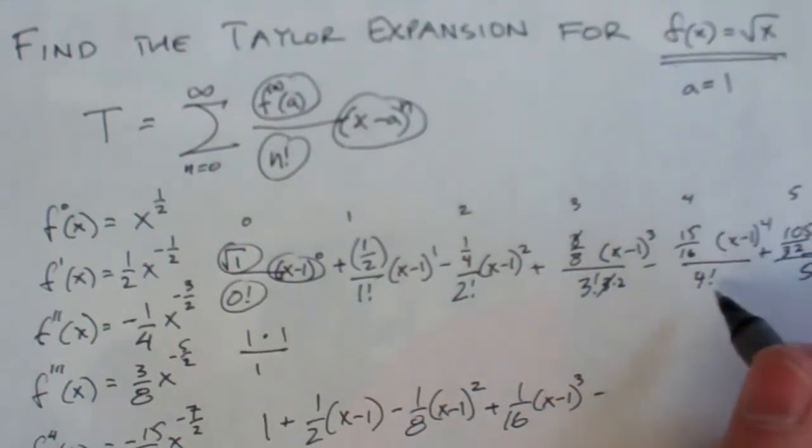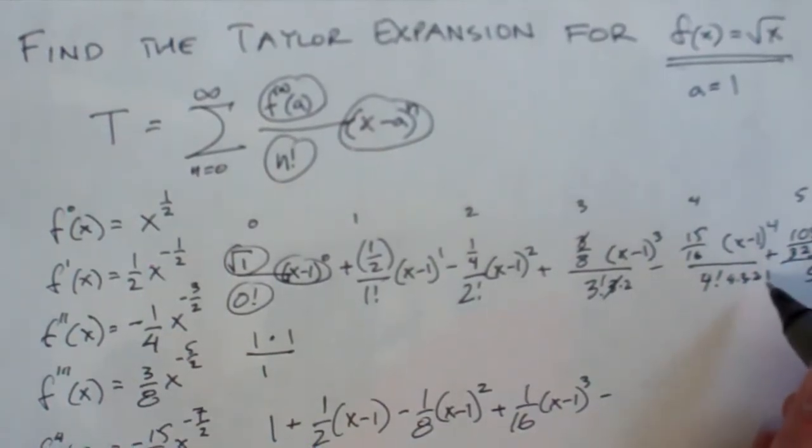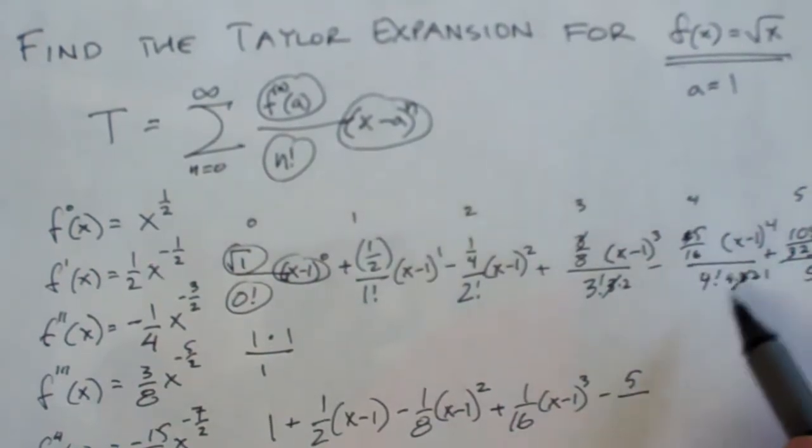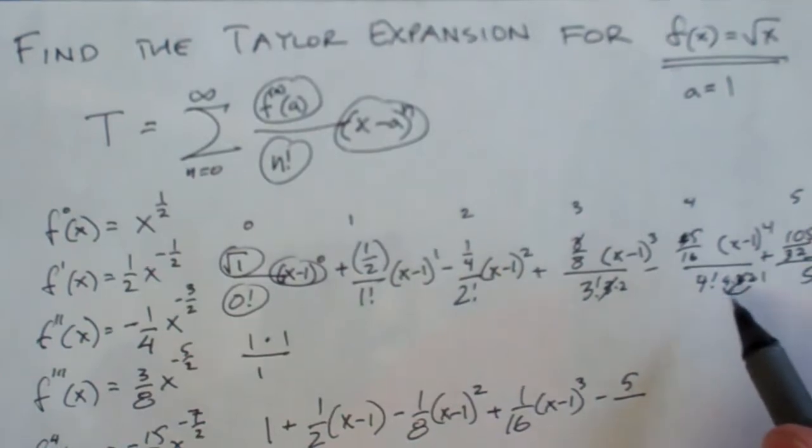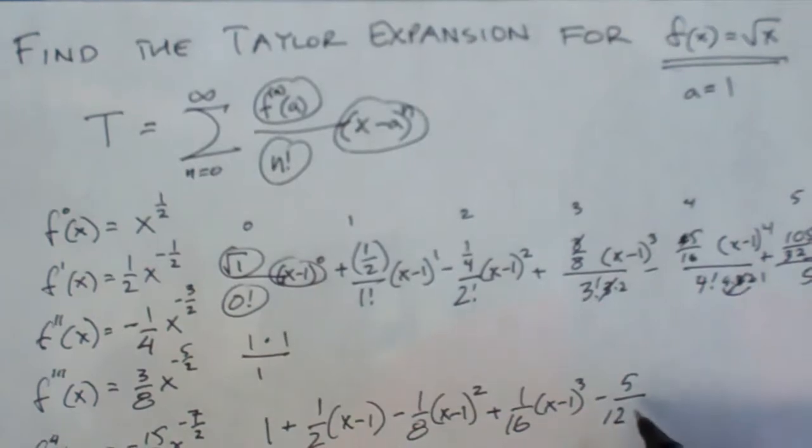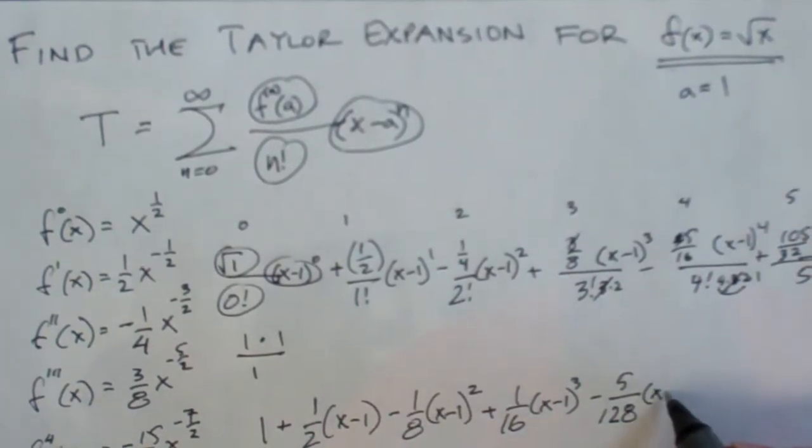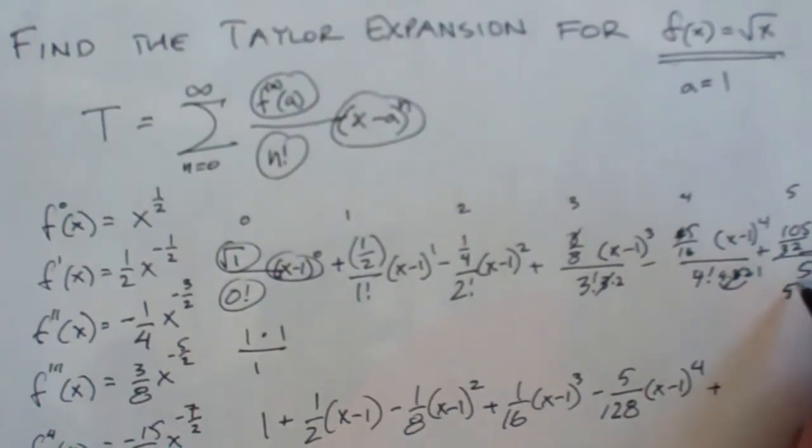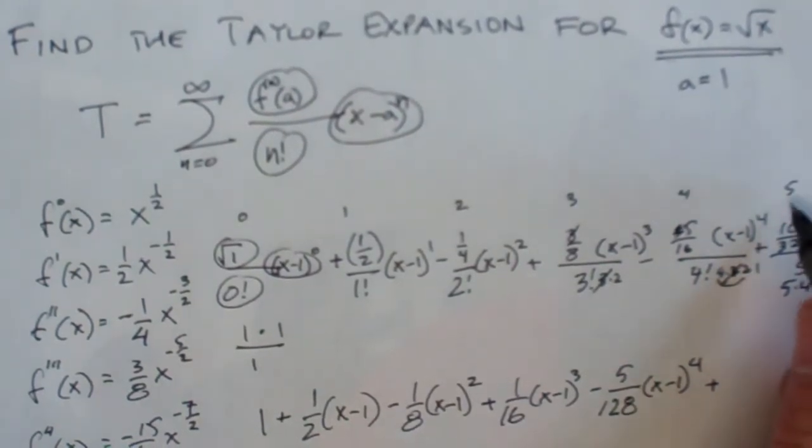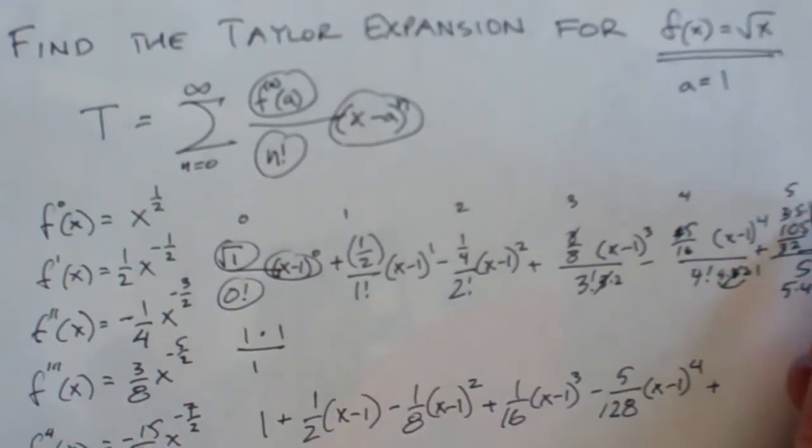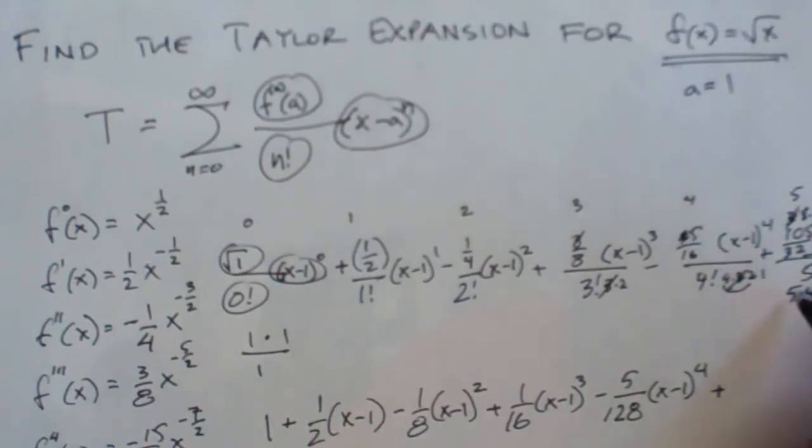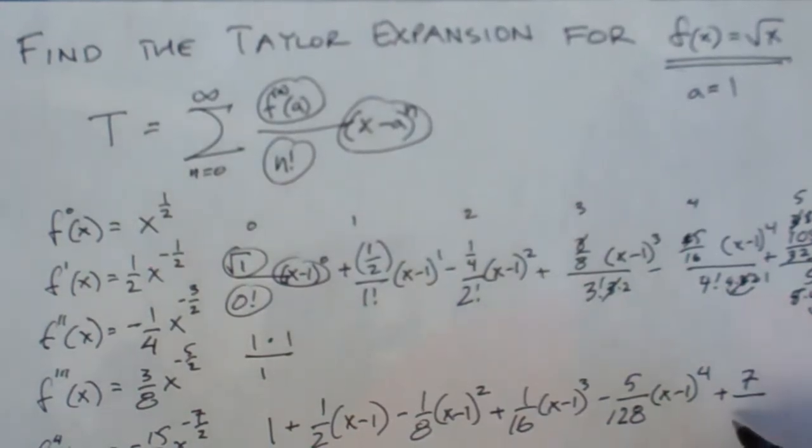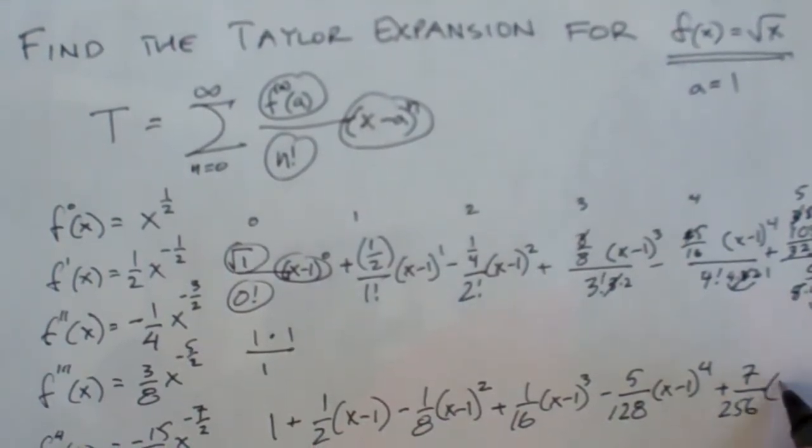And then this is minus. And then this is 4. 4 times 3 times 2 times 1. The 3 cancels with the 5 and 15 and makes it into 5. So it's 5 then over 16 times 4 times 2 is 8. That's going to be then 5 over 128. Check that. Make sure I did that correctly. I think I did. And then keep going. The fourth. So then the last one is plus. And again this is 5 times 4 times 3 times 2 times 1. So here 105 is 3 times 5 times 7. So this 3 cancels with that 3. This 5 cancels with that 5. And I've got then 7 over 32 times 4 times 2 is 256. And then that's x minus 1 to the 5th.